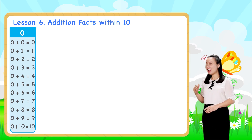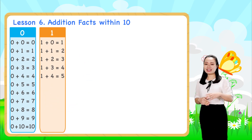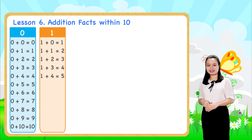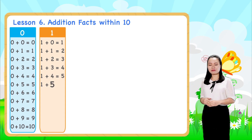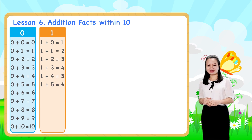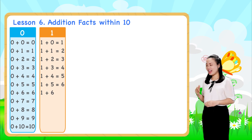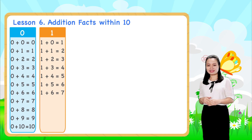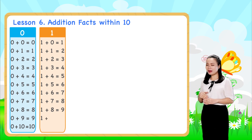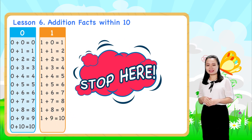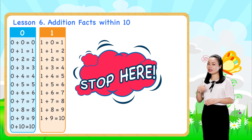Next, look at the ones table. We already learned these addition facts. Let's continue. One plus five equals six. One plus six equals seven. One plus seven equals eight. One plus eight equals nine. One plus nine equals ten. We'll stop here for now because we're just learning addition facts within 10.